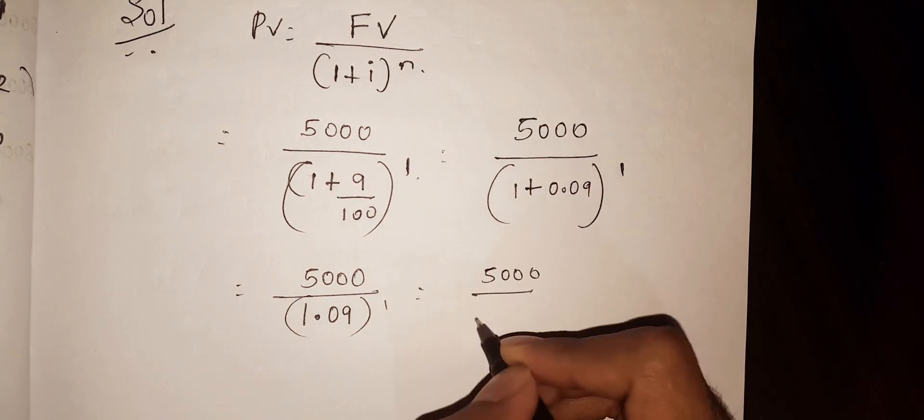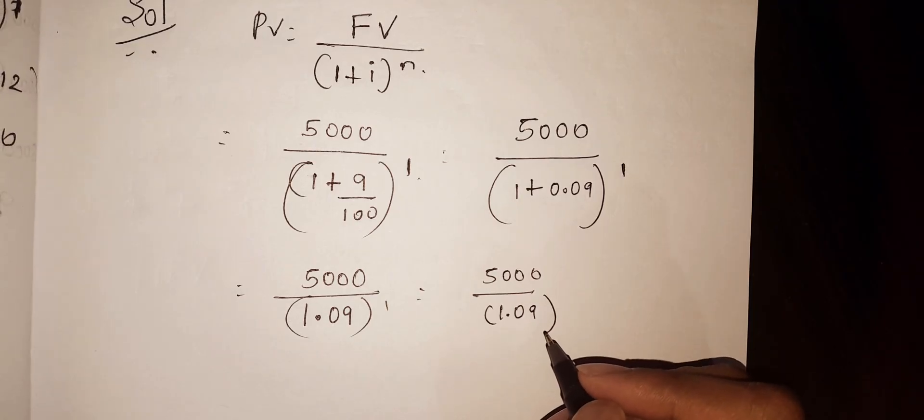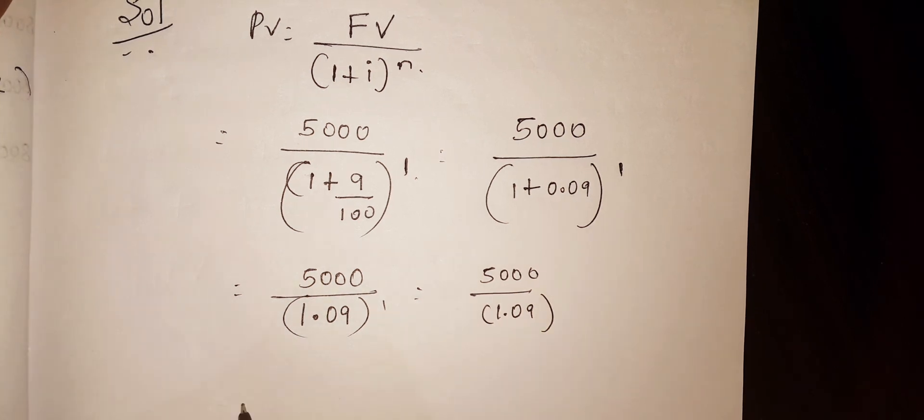Anything to the power of 1 is always 1. So, 5,000 divided by 1.09 equals 4587.16. This is the present value.